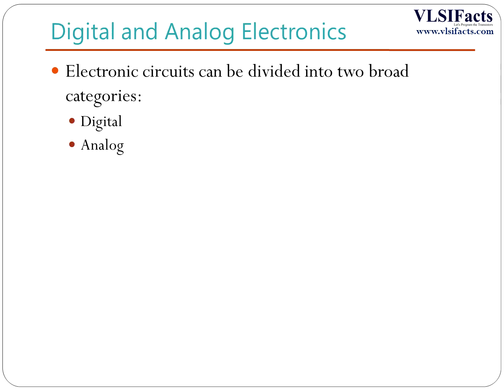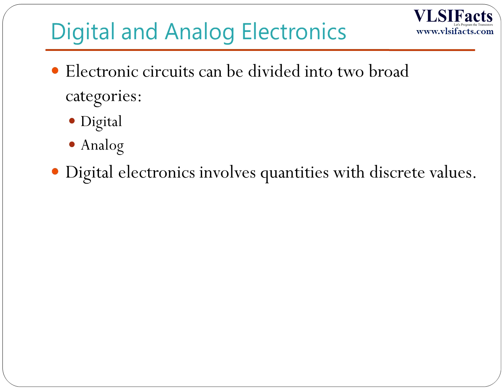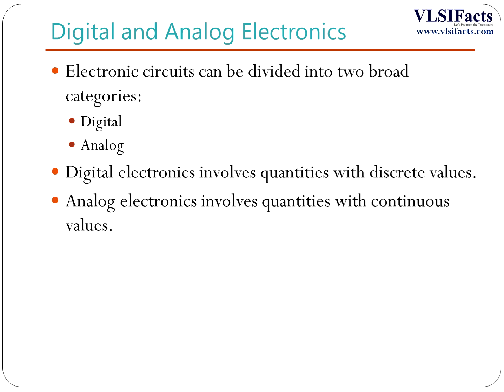Electronics circuits can be divided into two broad categories. The first one is digital and the other one is analog. Digital electronics involves quantities with discrete values, whereas analog electronics involves quantities with continuous values.